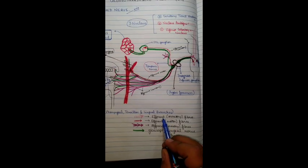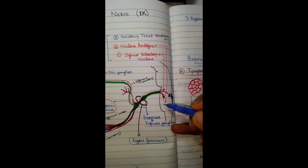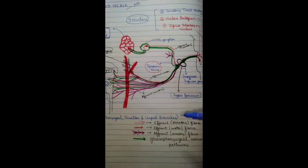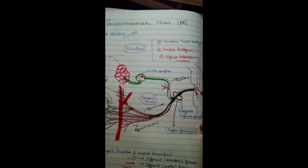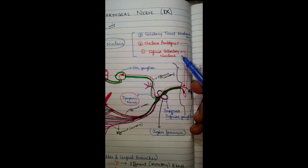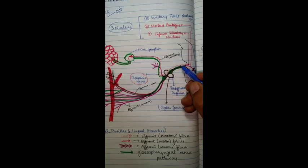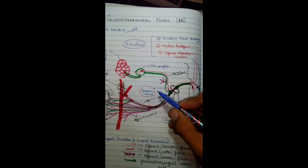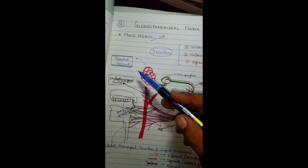First of all, we will see about the efferent secretory fibers. As you can see, this is the pons area and this is the medulla oblongata. All the nuclei of the glossopharyngeal nerve will be present in the medulla oblongata region. These efferent secretory fibers — shown as dotted lines — will run from the inferior salivatory nucleus, which is the first nucleus. From there, these fibers will run along the glossopharyngeal nerve and move towards the tympanic nerve.